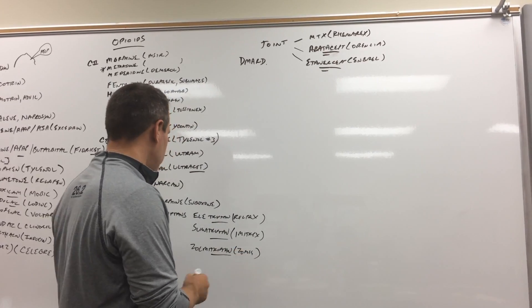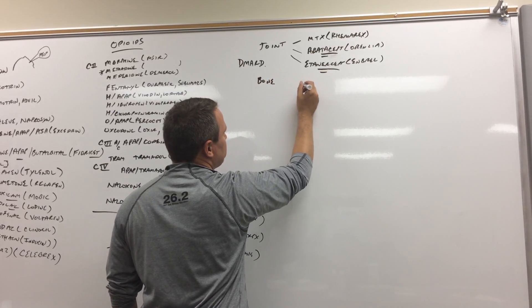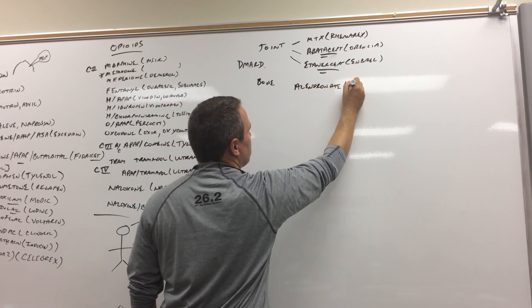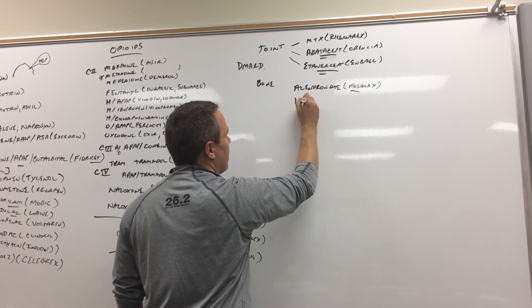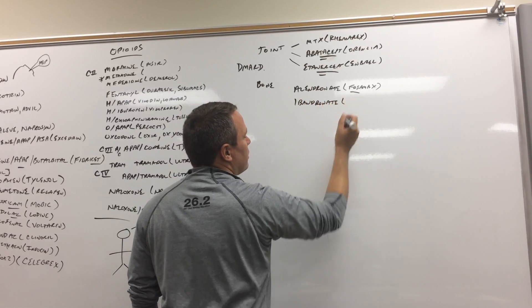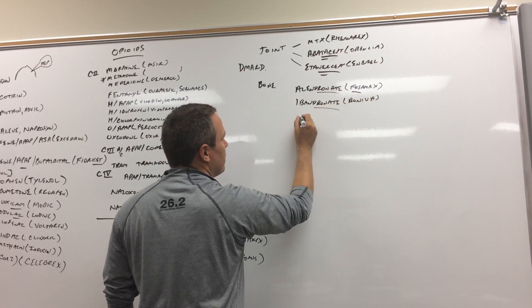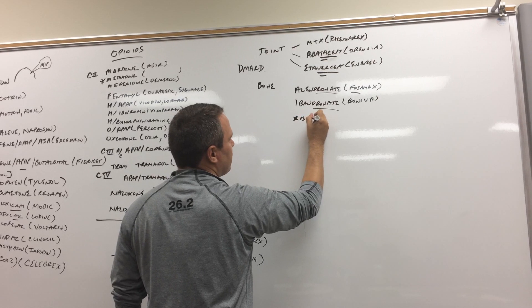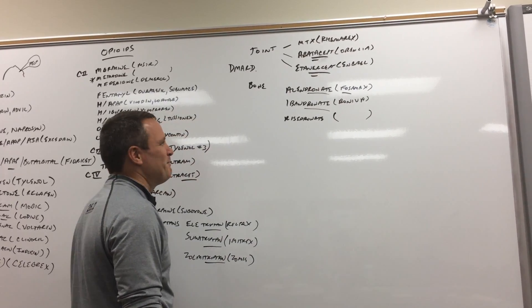Then we went to the bone so we could do some of the bisphosphonates. So you've got alendronate. They've all got that '-dronate' stem which is Fosamax. And if you know anatomy what the fossa is. Ibandronate which is Boniva. They cleverly put in the word bone. And then you've got risedronate and I'm blanking on the brand name. Maybe it'll come back to me.